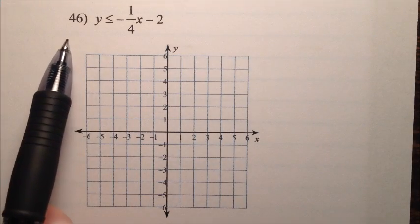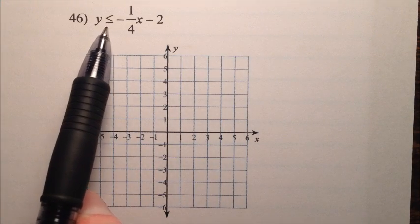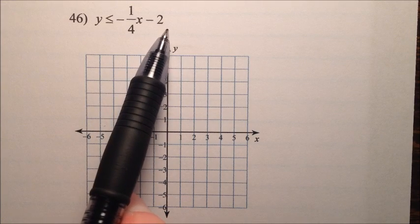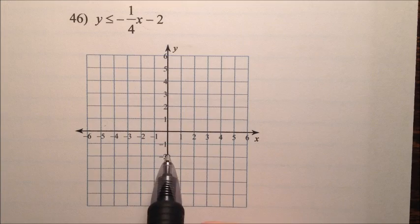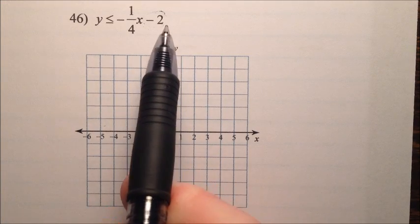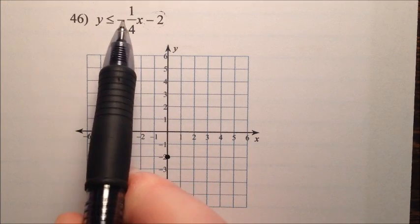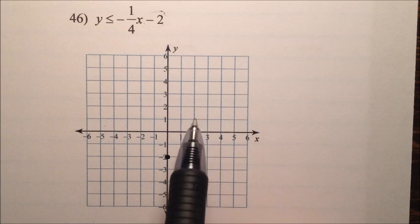In number 46 here, we have y is less than or equal to negative 1 fourth x minus 2. So again we'll start by drawing our point on the y axis, which is negative 2 for the y intercept. And then we can use our slope, negative 1 fourth, to draw some more points here.